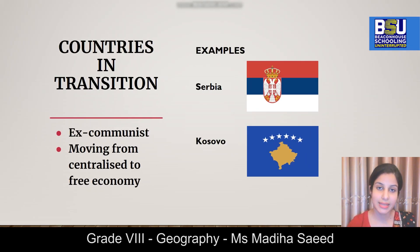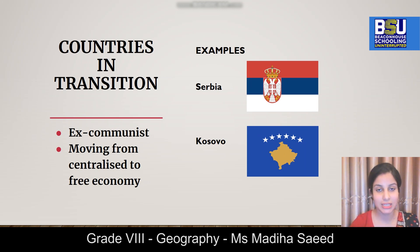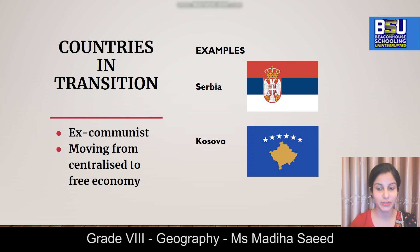The next category is in transition economies. These were previously communist states and are now transitioning towards a free market or capitalism. Two examples are eastern European countries Serbia and Kosovo.